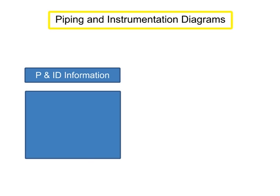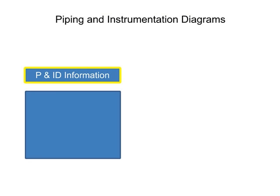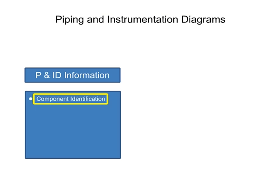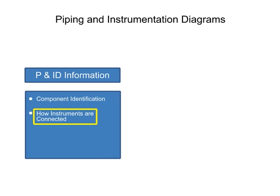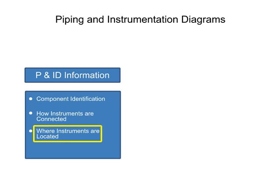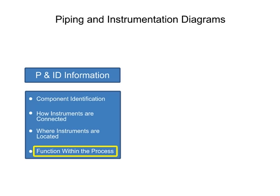Piping and instrumentation diagrams provide information that include component identification, how instruments are connected, where instruments are located, and their function within a process.